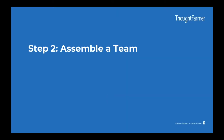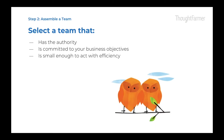Step two: assembling a team. The key components to a successful intranet project team are that it has authority, commitment, and agility to move things forward. A potential pitfall in this stage is not choosing a team early enough and not involving the right people. This can derail your intranet project later.